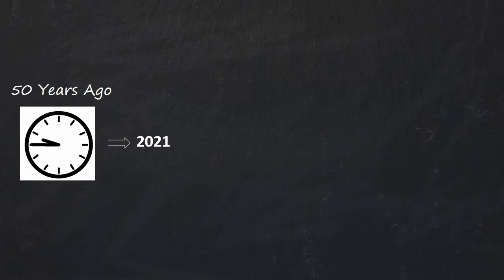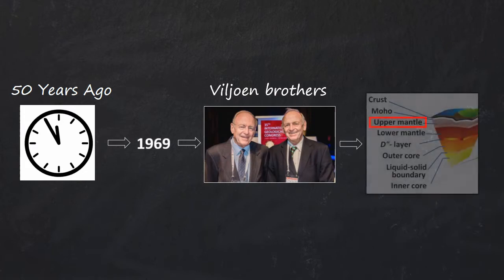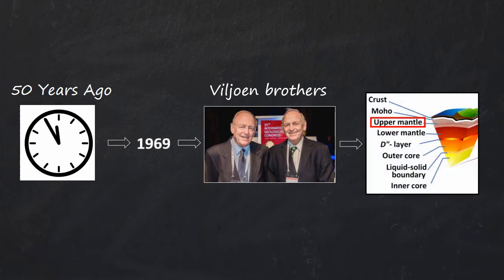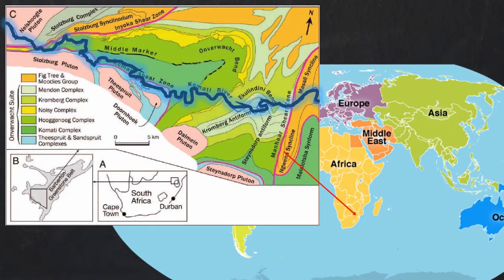About 50 years ago in the year 1969, Viljoen brothers Maurice and Richard Viljoen set up to study the nature of the Earth's upper mantle. The study was undertaken in South Africa's Barberton area, where this particular rock was first identified near Komati river, thus giving it its name Komatiite.